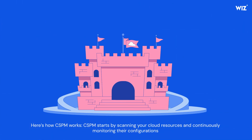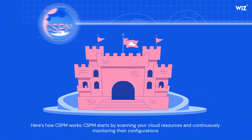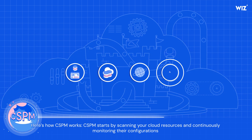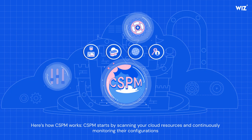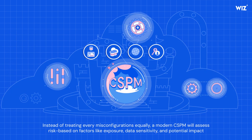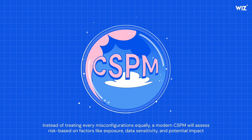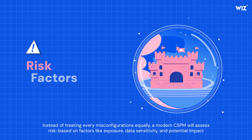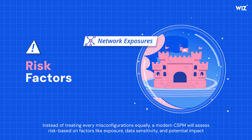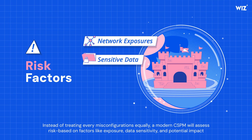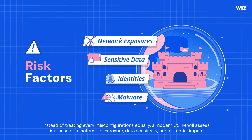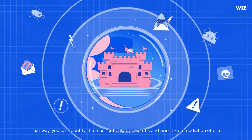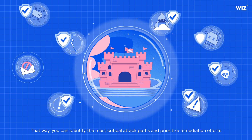Here's how CSPM works. CSPM starts by scanning your cloud resources and continuously monitoring their configurations. Instead of treating every misconfiguration equally, a modern CSPM will assess risks based on factors like exposure, data sensitivity, and potential impact — so you can identify the most critical attack paths and prioritize remediation efforts.